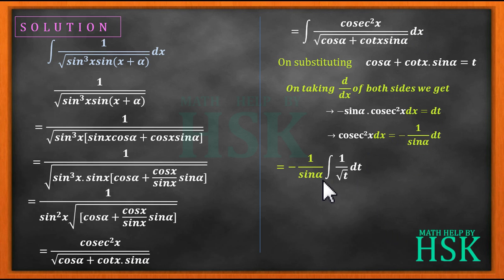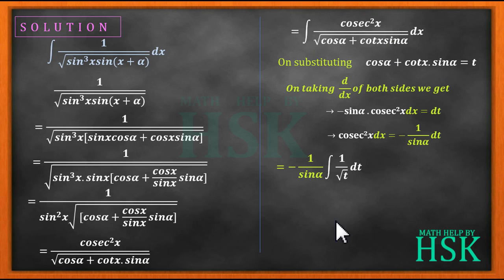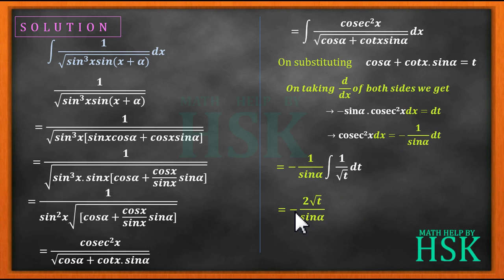Substituting into the integral, we get minus 1 upon sin α times the integral of 1 upon square root of t dt. The integration of 1 upon √t is 2√t, so this becomes minus 2√t upon sin α.